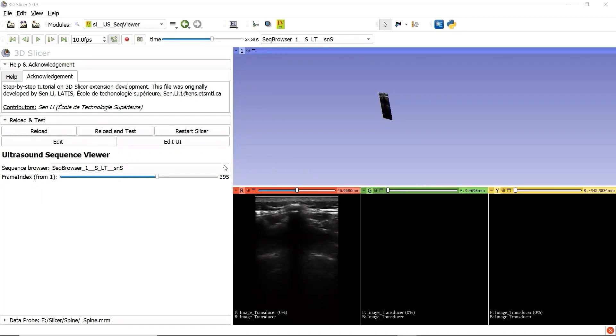We can also see that there can be a difference between the active Sequence Browser, between our custom module and the module given by 3D slicer. We want the two Sequence Viewers to be synchronized because this mismatch can be confusing and not user-friendly. How can we synchronize the two Sequence Viewers and optimize our custom module?